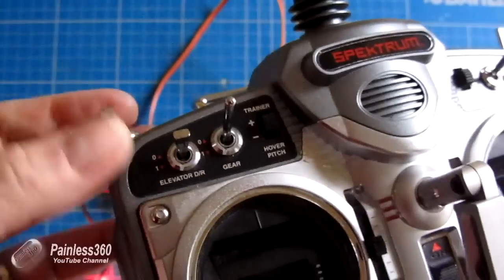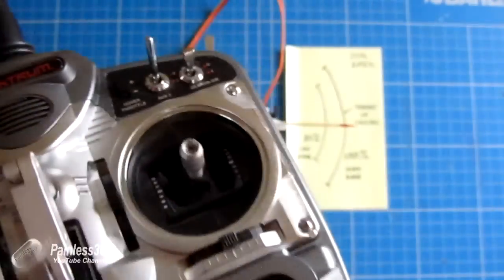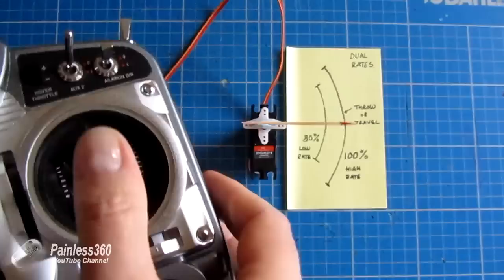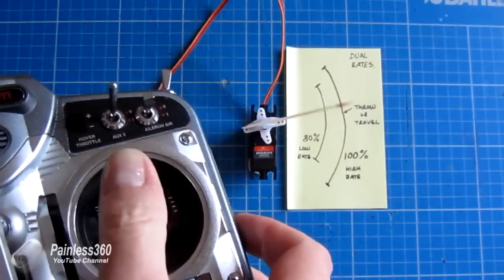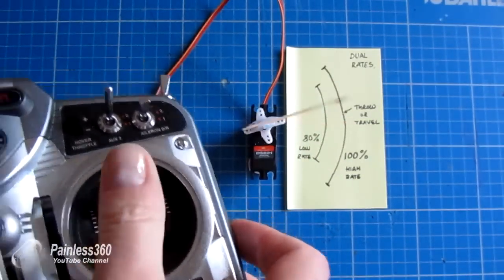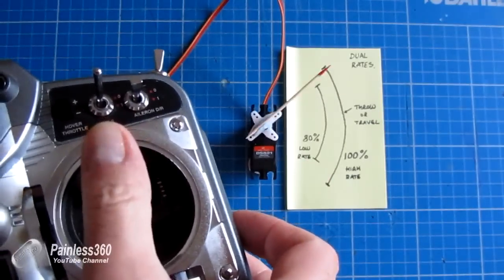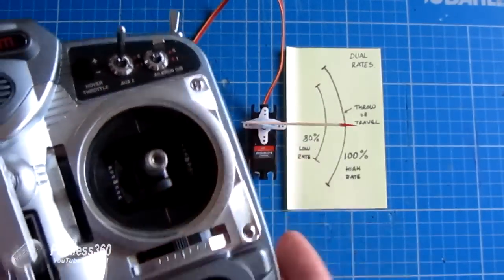And that switch on the corner is the one that I'm flicking so that for one mode I can get 80% travel, and that's what it gives me, and then if I flick in the switch, it now goes to a hundred percent travel, and I get that extra movement.